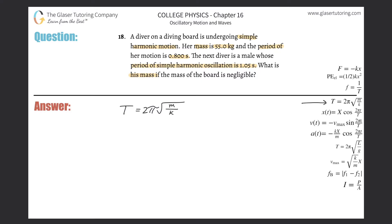We have two cases: a woman diving and a man diving, but they're both diving from the same board. So in this formula, what must be the same between the two people? The spring constant — that's the same for both.